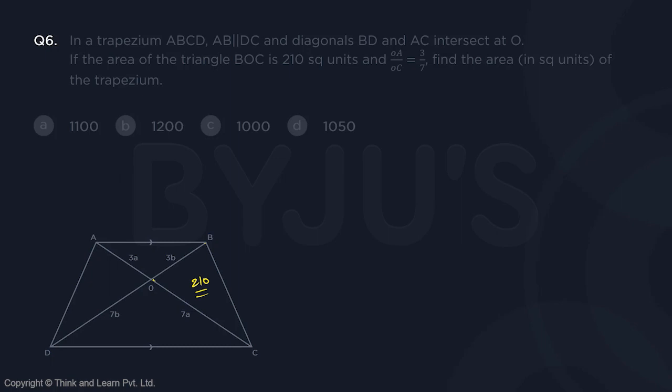OA by OC, so we have OA, so this part by OC, OC is this part as 3 is to 7, so it's already taken as 3A and 7A. Find the area in square units of the trapezium.